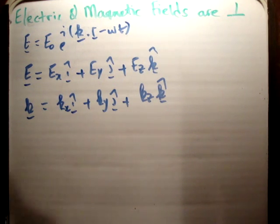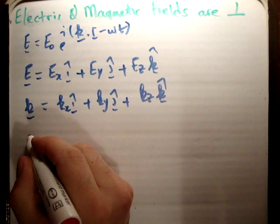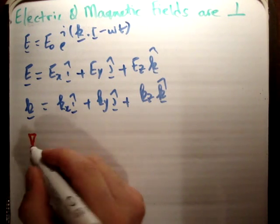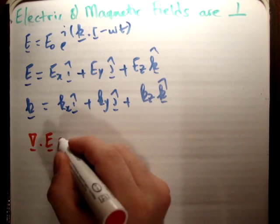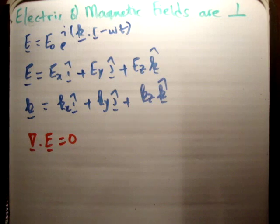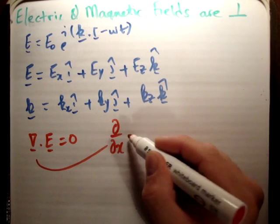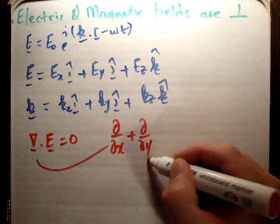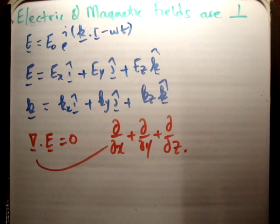If we compute the dot product of the nabla vector with the electric field, we do that because Gauss's law for electricity states that the del operator dot product with the electric field is equal to zero. That is one of Maxwell's equations. The del operator — this upside-down triangle — is equal to ∂/∂x plus ∂/∂y plus ∂/∂z.